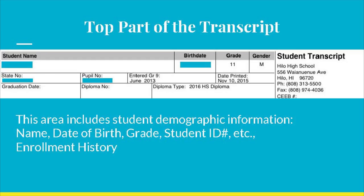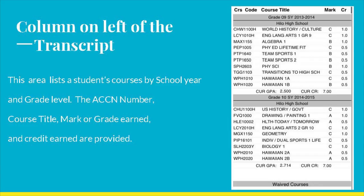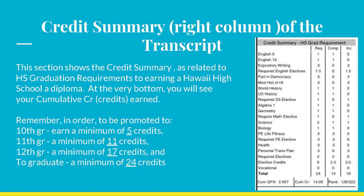Let's look at the various parts of a transcript. At the top of the page, you will find your demographic information like name, date of birth, your student ID number, enrollment history, and transcript statistics. In this area, it shows your cumulative GPA and class rank. The bottom portion of your transcript shows all of the courses you have taken. They are grouped by year the courses were taken along with the title of the course, the ACCN number, grade, and credit earned. The total credits earned at the end of the year is also indicated. The credit summary may be confusing for some of you — pay attention to the very bottom where the total credits are indicated.